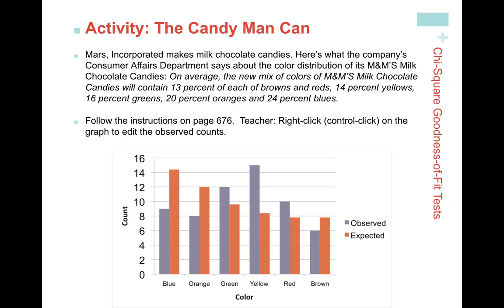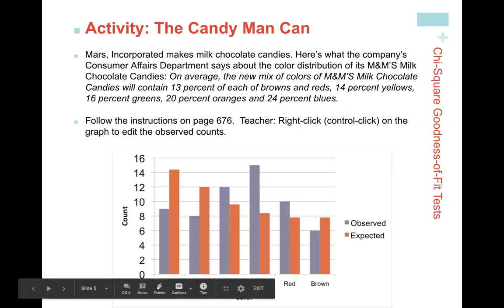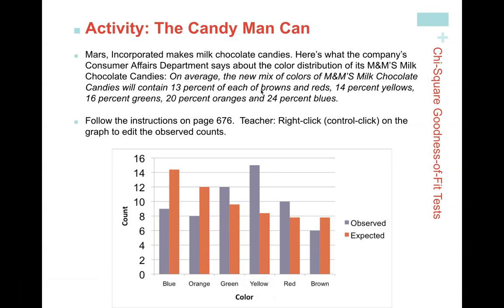We compare the observed counts — what you actually got — to the expected counts, which are the hypothesized values. Observed always means actual. Expected counts are computed by multiplying the claimed proportions by the total N. Comparative bar graphs are a nice way to visually compare. You might notice we got a whole bunch more yellows than expected, and fewer blues and oranges than expected.